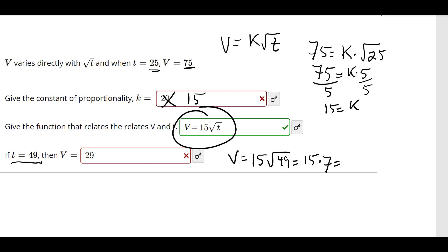Let me get my calculator out here. 15 times 7 is 105, so that's 105.